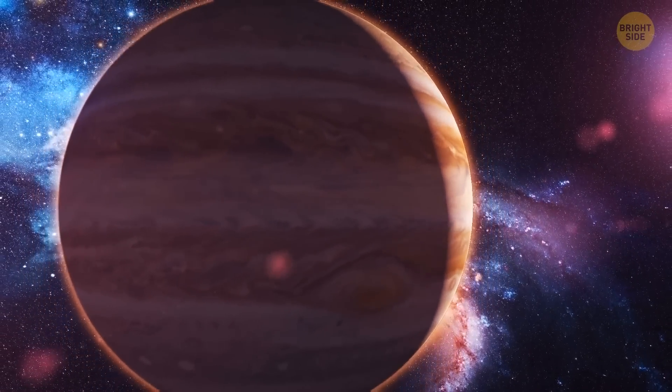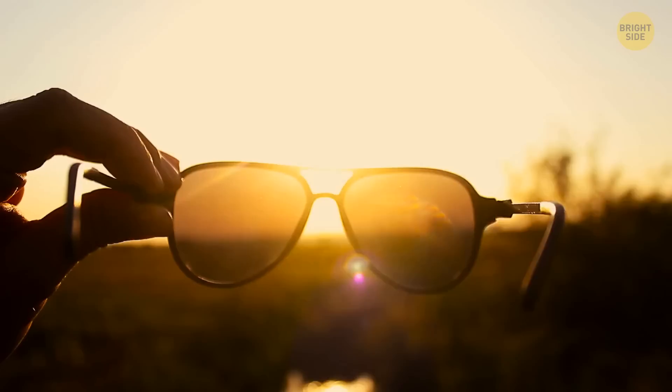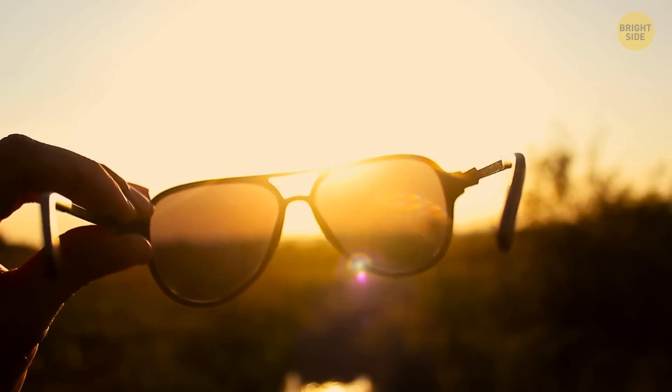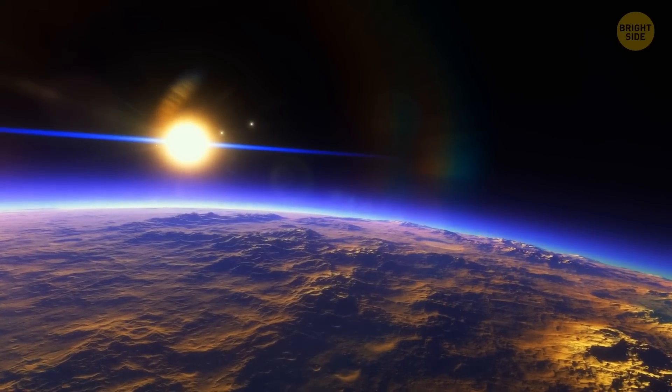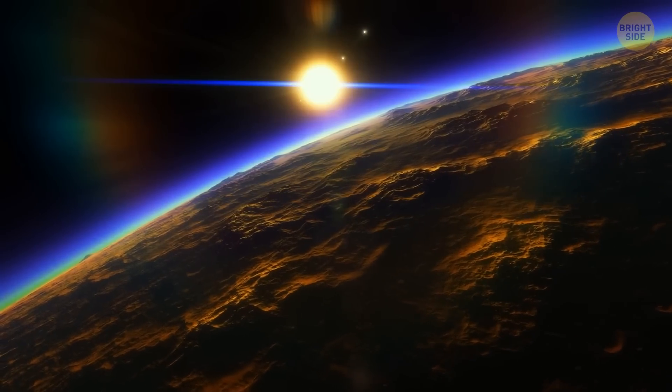If Jupiter was a star, it would also greatly increase the amount of radiation the surface of Earth would receive. Our atmosphere would have to protect us both from the radiation coming from the Sun and from Jupiter's radiation.